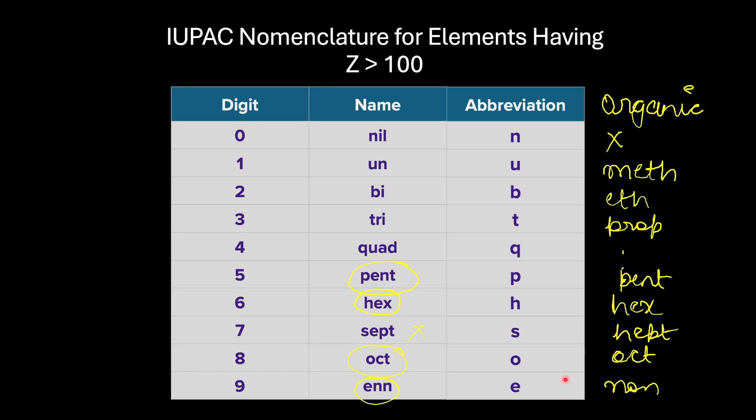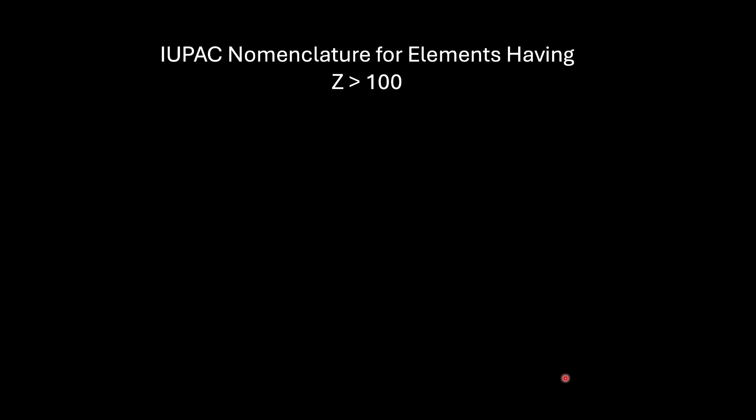Let's practice it. Let's take atomic number 105. For 1, what did we have? The root name was un. For 0, the root name was nil. And for 5, the root name was pent. So what's the name? Un-nil-pent and we have to put -ium towards the end. So that becomes unnilpentium. Now, what shall be the symbol of this atomic number 105? We have to look at the abbreviations: U, N, and P. So the symbol shall be UNP. Come what may, all elements with atomic number greater than 100 will have unique symbols as well as every abbreviation is unique.